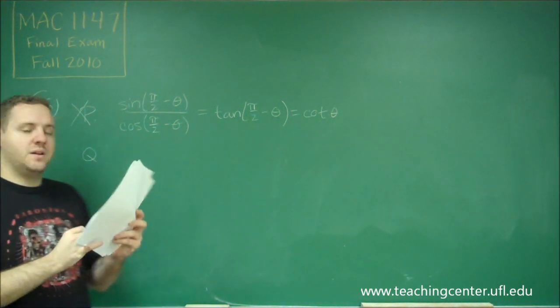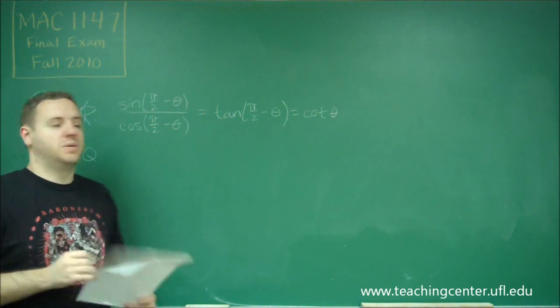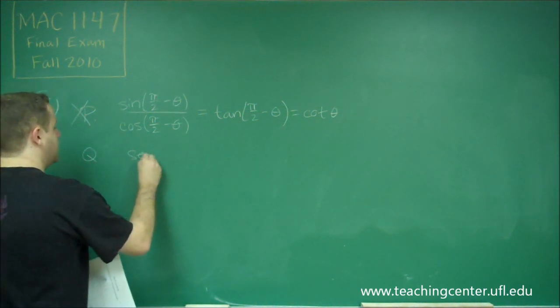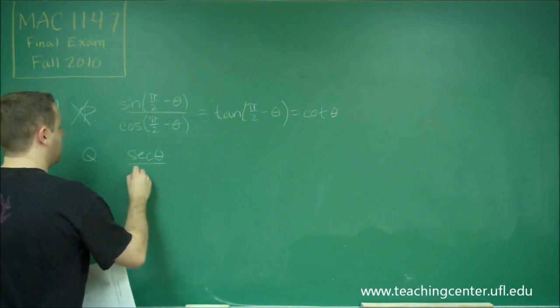Choice Q, which is secant theta over cosecant theta, this is the tricky one here.